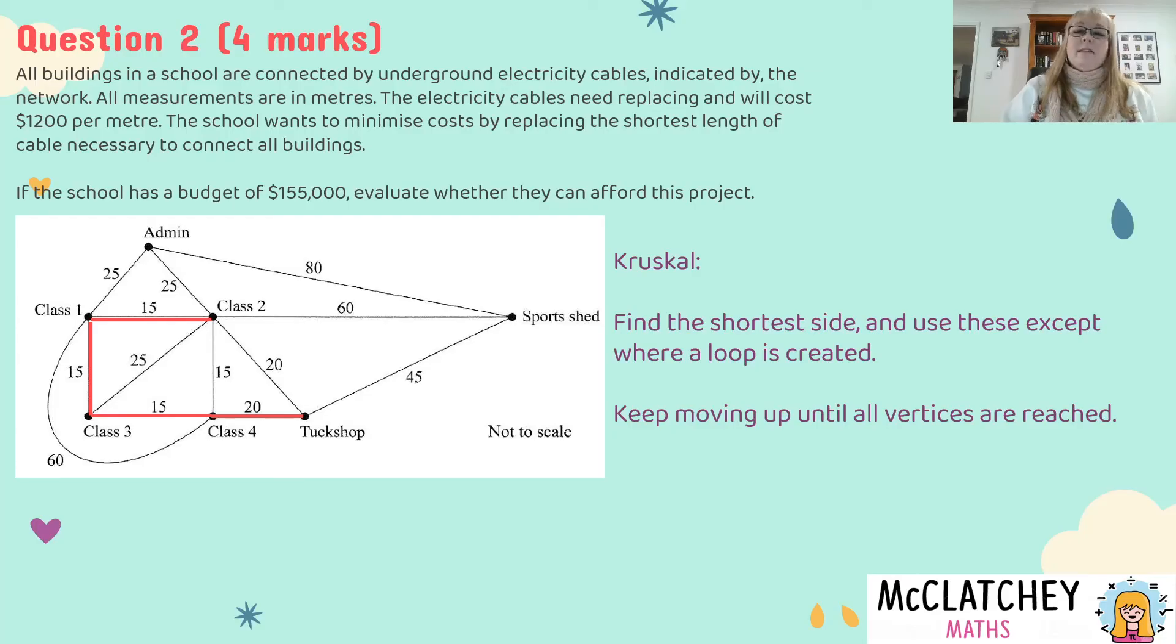So now I'm going to move from 15 to the next highest number which is 20 in the network and there are two different ones with 20. I could pick either of those, the first one there goes from class 4 to the tuck shop. I could have also done class 2 to the tuck shop not a big deal they're both 20 meters long but I only need to pick one of them because the minute I pick the other 20 I've now closed that network in.